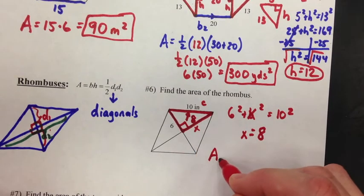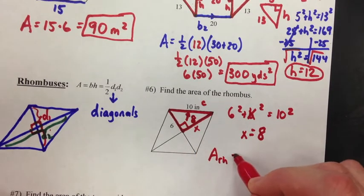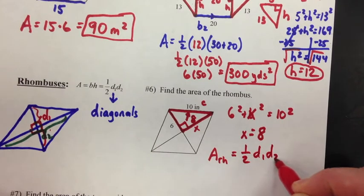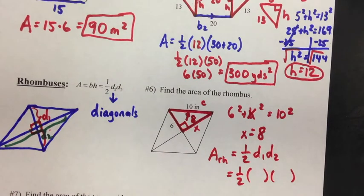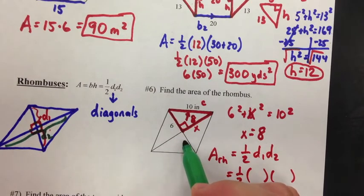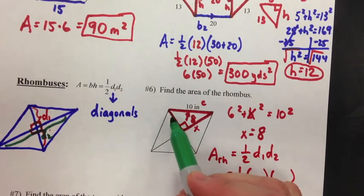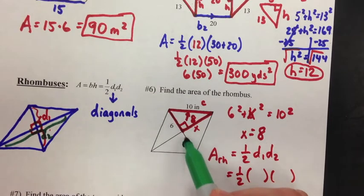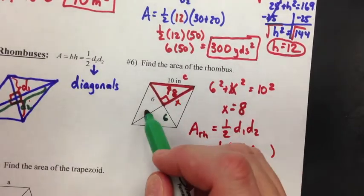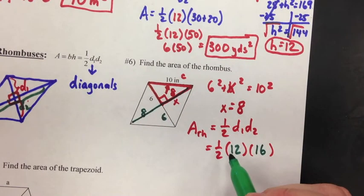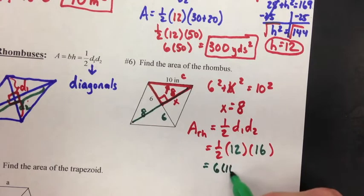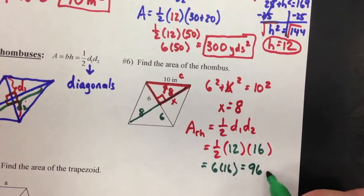Now the formula for a rhombus: area equals one-half times d1 times d2. One of the diagonals — if this piece is 6, so is the other piece, because in a rhombus the diagonals bisect each other. So the whole diagonal is 6 plus 6, which is 12. For the longer diagonal, this is 8 and this is 8, so 8 plus 8 is 16. Half of 12 is 6, and 6 times 16 is 96 inches squared. That's the area of the rhombus.